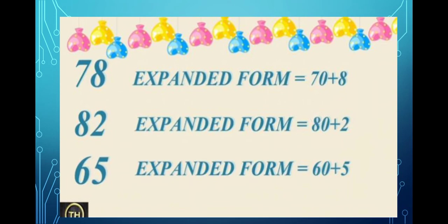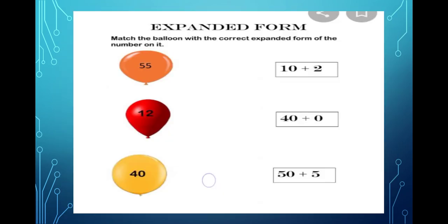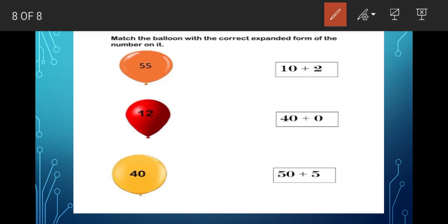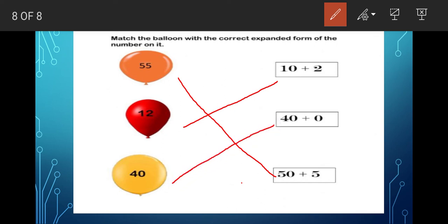So writing as 'seven tens plus eight ones' or '70 plus 8' — both are correct. Now let me ask you a question. What is the expanded form of 55? Very good! Now, what is the expanded form of 12? 10 plus 2 — very good! Now what is the expanded form of 40? 40 plus zero.